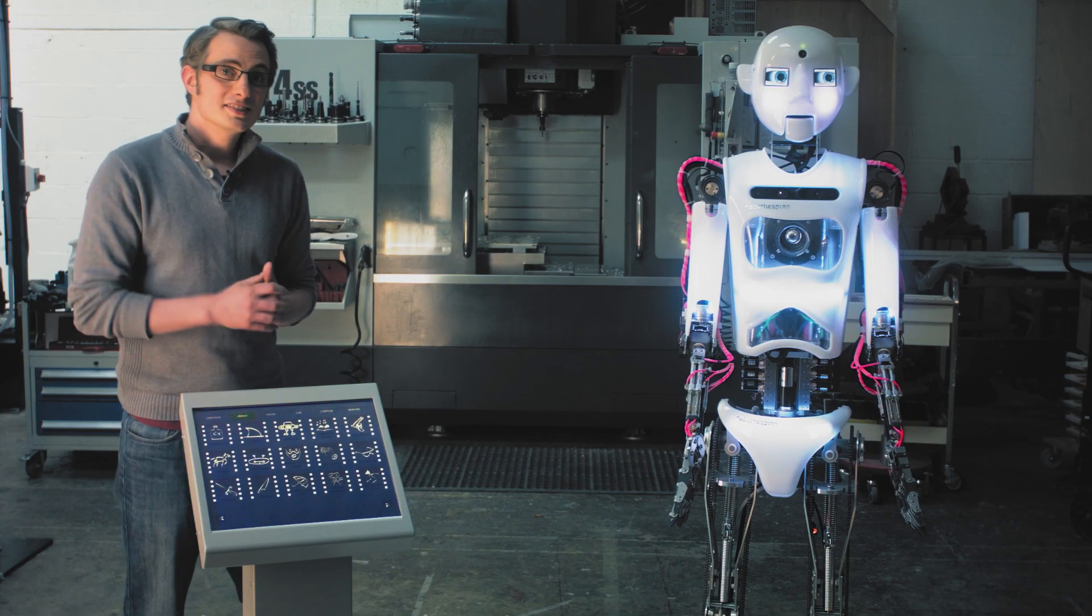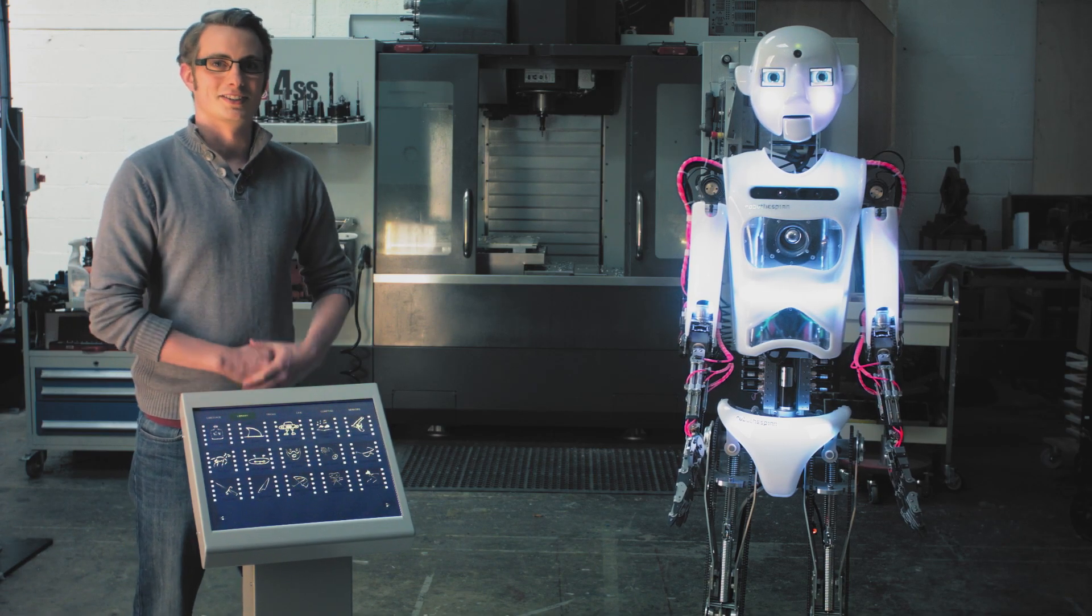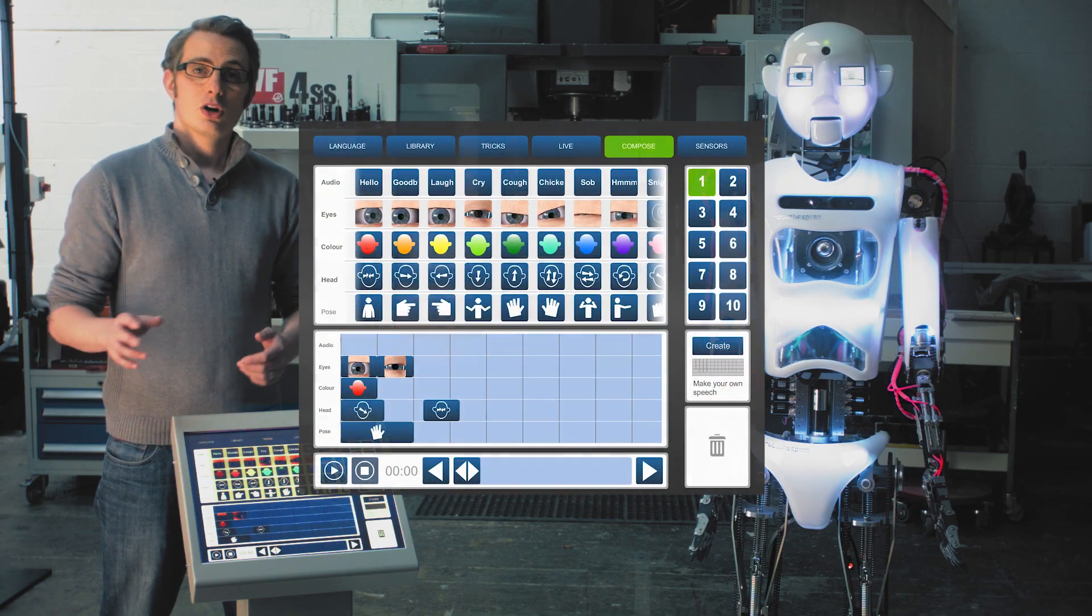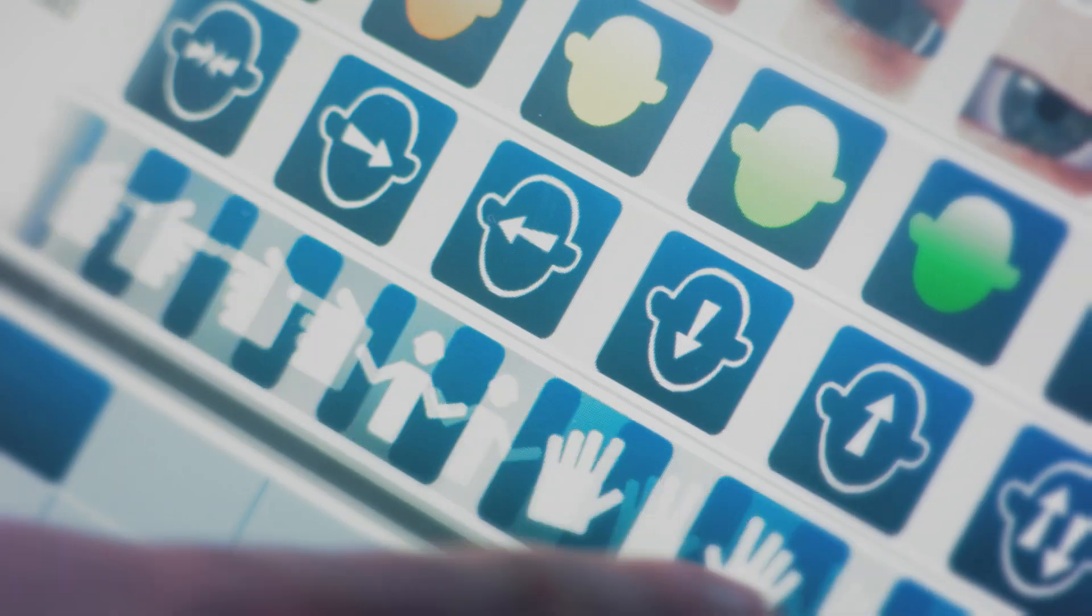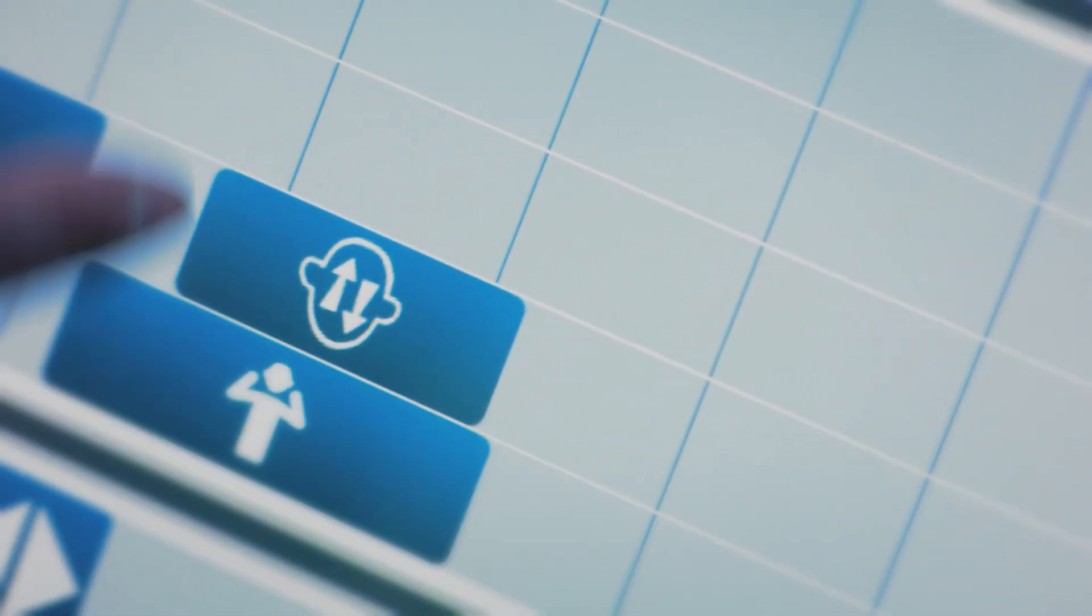Again, nice and simple, but with very effective results. For a little more control, you can use the compose screen. Here we can select audio, eyes, color, head, and pose, simply by dragging into the timeline, or you could create your own speech.